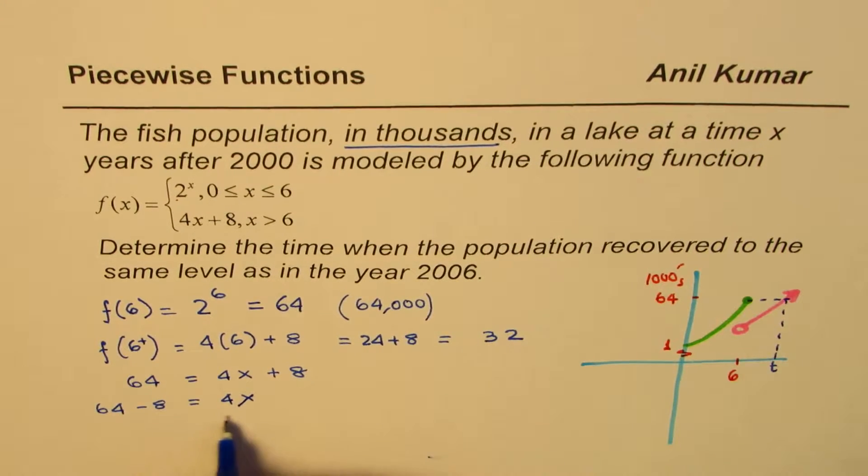That is to say, we can now find the value of the function when 4x plus 8 is equal to 64. So we can write this as 64 equals 4x plus 8, and then find what x is. So we get 64 minus 8 equals 4x, and x equals 64 minus 8 divided by 4. So we have 64 minus 8 divided by 4 equals 14.